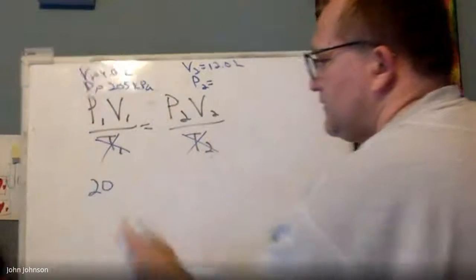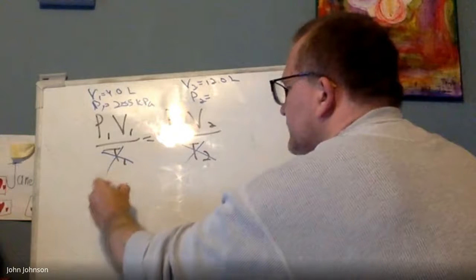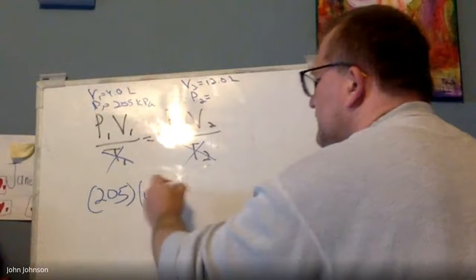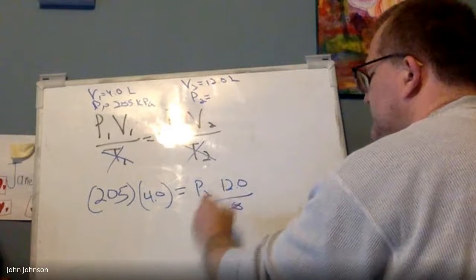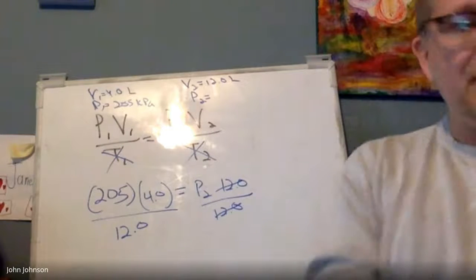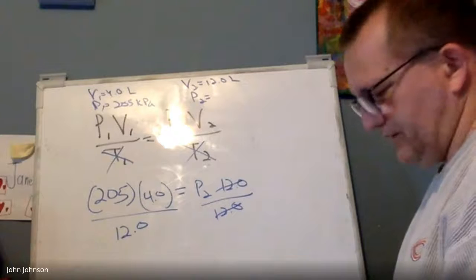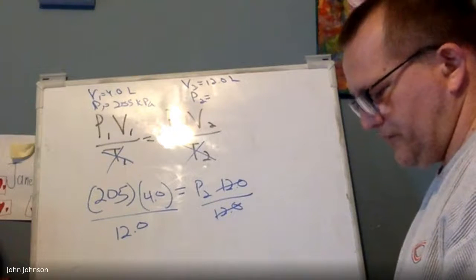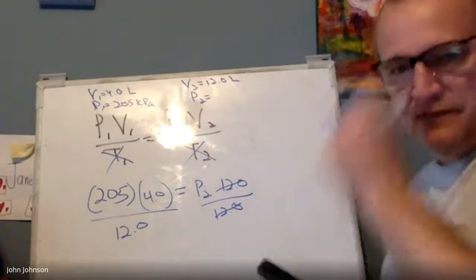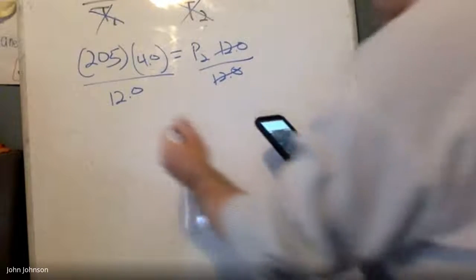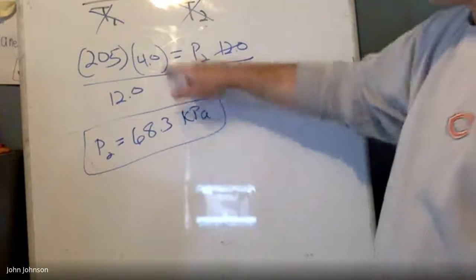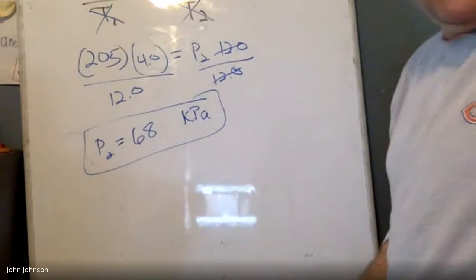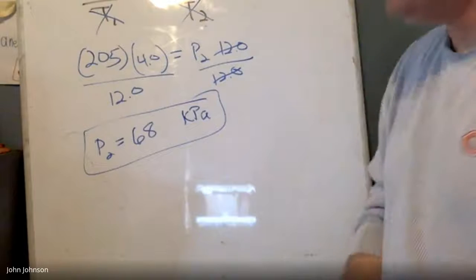Now I got P1V1 equals P2V2. I substitute in P1 is 205 kPa and my V1 is 4.0, and that equals my P2, which I don't know, but my V2 is 12. Divide both sides by 12, and now I can solve it. So with my calculator, I take 205 times 4 divided by 12, and when I do all that math, I get P2 to equal 68.3. And my units are kPa. Maybe two sig figs, so probably 68 would be my best answer, but on the assignment you'll see that there's plenty of opportunity for some variance, so as long as you're close I think you'll get it.